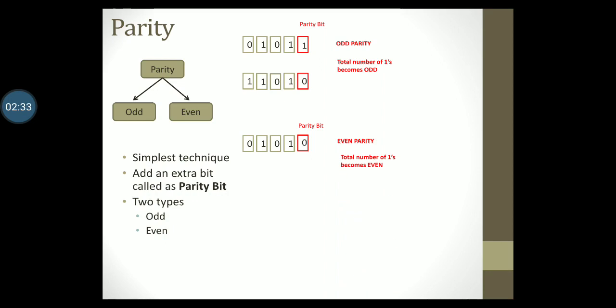Let's try it again. Supposing we have 4 data bits 1 1 0 1. Insert another bit called as the parity bit. Assume that we are still following even parity. For even parity, we will set this bit to 1 so that the total number of ones in the codeword along with the parity bit becomes even.